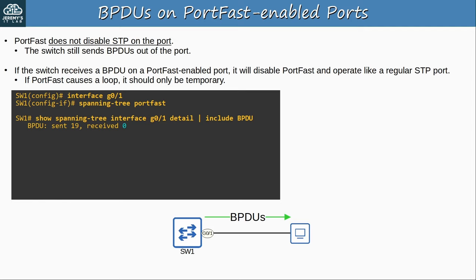You can use 'no errdisable detect cause' followed by the cause name to disable the feature for a particular cause, but it doesn't work for all causes — for example, error-disable can't be disabled for BPDU Guard, because the entire point of BPDU Guard is to disable ports that receive BPDUs. However, you can use 'errdisable detect cause bpduguard shutdown vlan', which makes BPDU Guard shut down only the offending VLAN on the port instead of the entire port, allowing more granular control — though in general the default mode is usually what you want.